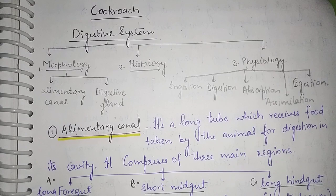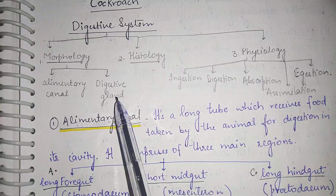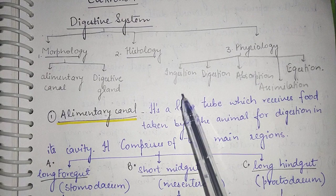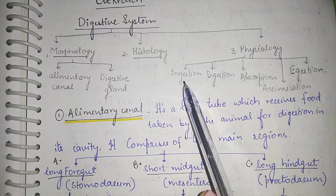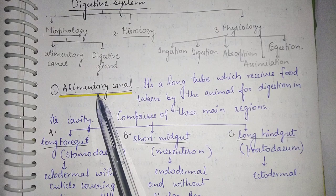In this video we are going to study about the digestive system of cockroach. The digestive system is mainly divided into morphology, histology, and physiology. In morphology we study the alimentary canal starting from the mouth and ending at the anus, and also the digestive glands. Histology involves studying the tissues in the alimentary canal. Physiology covers the process of digestion including ingestion, digestion, absorption, and assimilation.